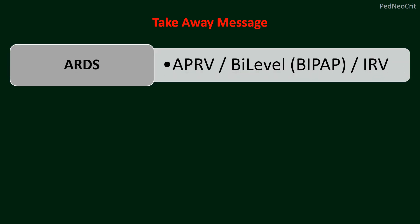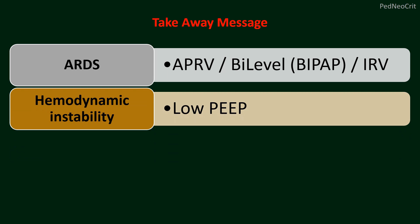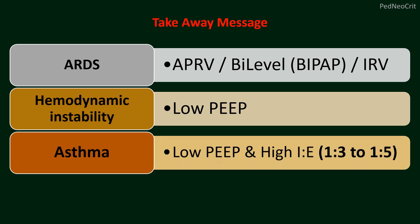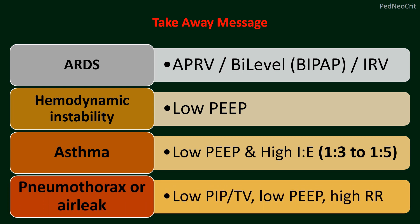Which mode will you choose according to patient disease condition? In ARDS, it is APRV, bi-level or inverse ratio ventilation — we have not discussed these today and will cover advanced modes in subsequent lectures. If the patient is hemodynamically unstable, very high PIP is better to avoid, but low PIP less than 4 or 5 is not advocated. In bronchial asthma or hyperreactive airways, low PIP and high inspiratory-to-expiratory ratio is advised. In pneumothorax or air leak, low PIP or tidal volume, low PEEP, and high respiratory rate is advocated.